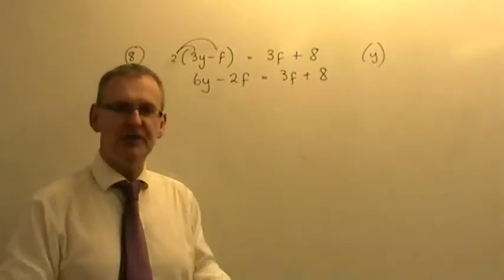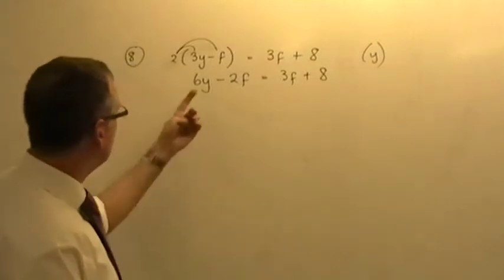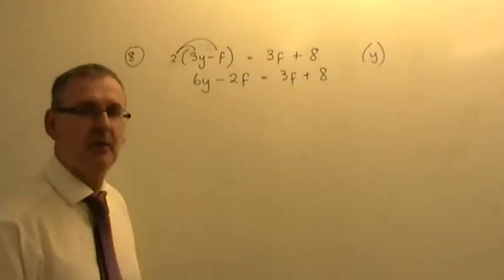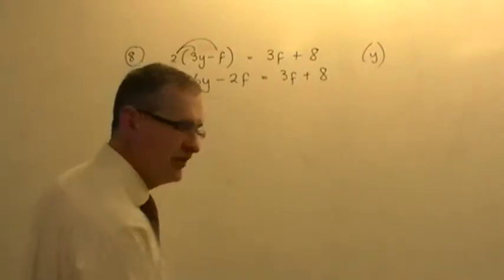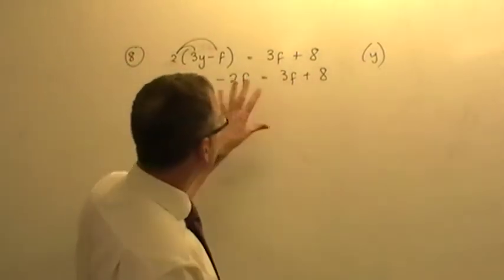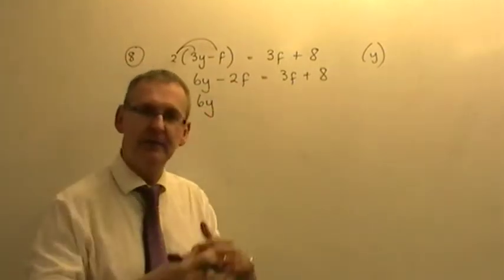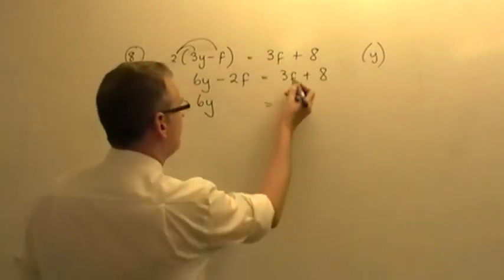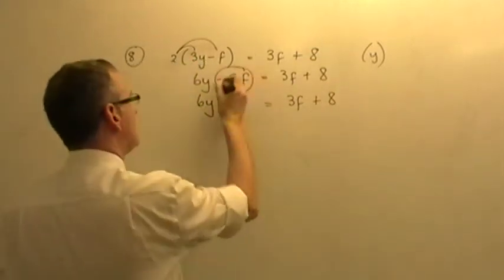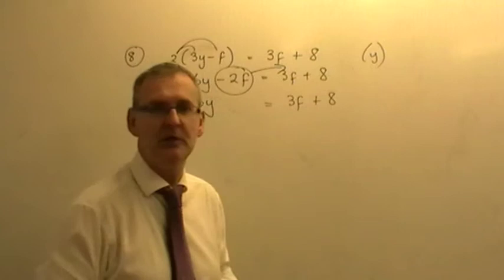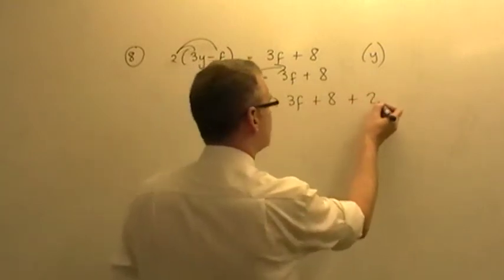Now what do we do? Well, we just manipulate the algebra just like we would manipulate the algebra for any ordinary equation. If I was trying to solve an equation and I've got 6Y's and I want to find out what Y is, I need to get that 6Y on its own on one side first. Everything else must go to the other side. There are no other Y's involved in the question at all. So what I'm going to do is leave the 6Y exactly where it is and I'm going to take everything else to the other side. Well, that 3F stays put. The plus 8 stays put. But that minus 2F needs to be shifted across the equal sign to the other side. If you take the minus 2F to the other side, it's going to become a plus 2F.